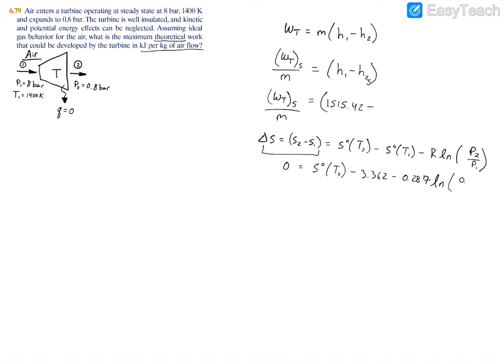And the units don't really matter here - we don't have to convert to kilopascals because it's just a ratio. If you multiply both sides by 100, you're going to have 80 over 800 anyways. So we just have to rearrange this and solve for s naught of T2.